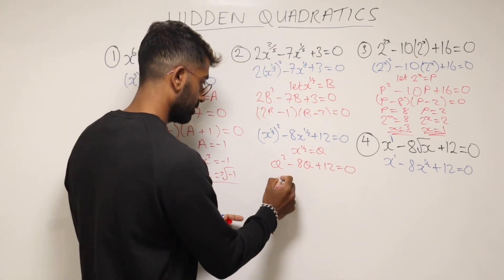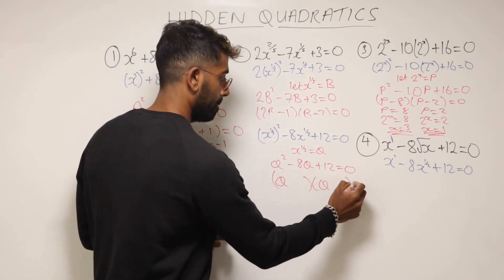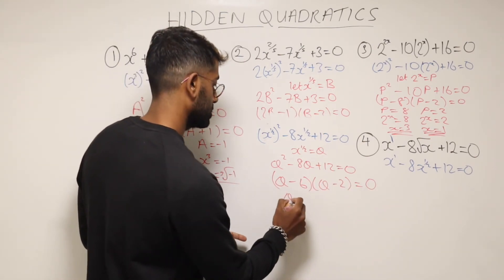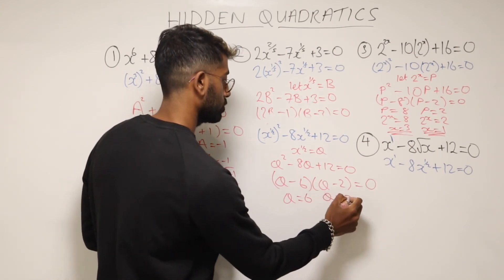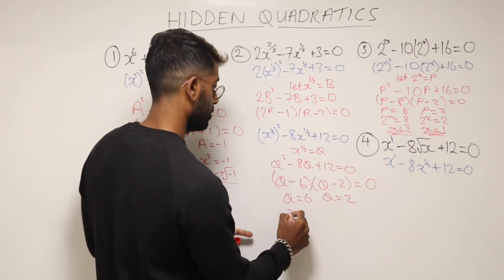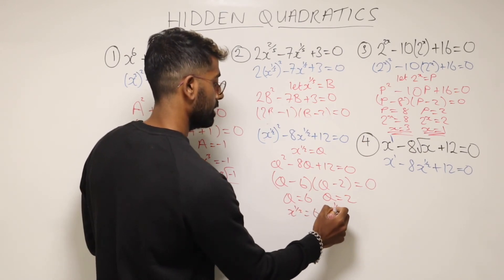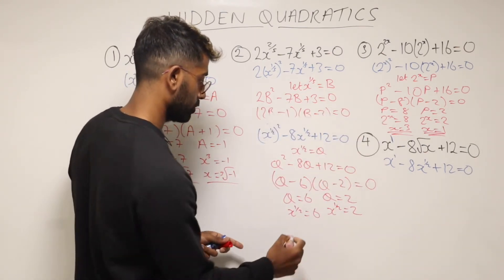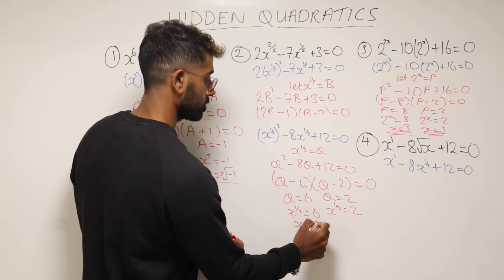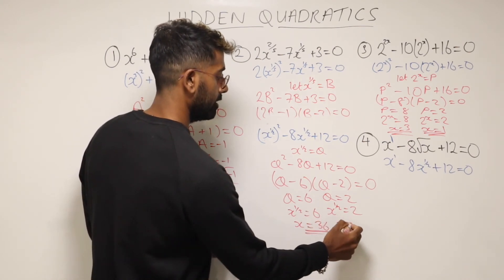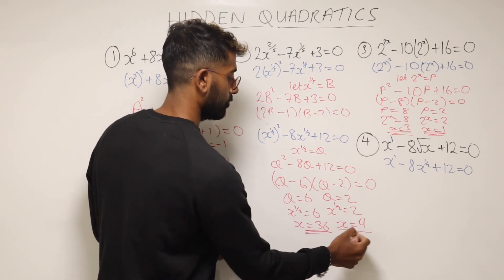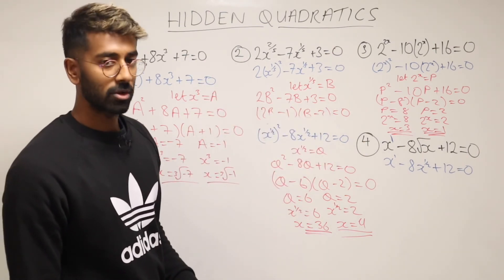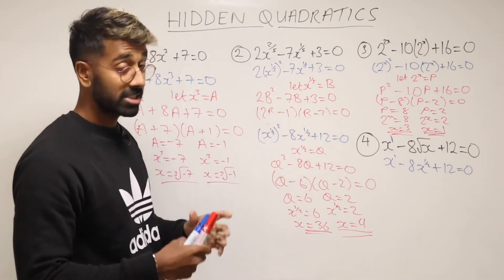And then we look to factorize. So that would be Q and Q and I think that's minus 6 minus 2 this time. Yes. So that means Q is equal to 6, Q is equal to 2. But that means x to the half is equal to 6 and x to the half is equal to 2. So to get rid of this x to the half we'll need to square. So we're going to have x is equal to, well, 6 squared so 36 and x is equal to 2 squared which is going to be 4. And there we go.